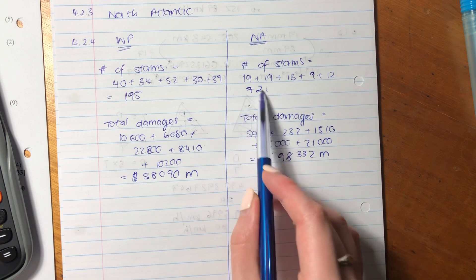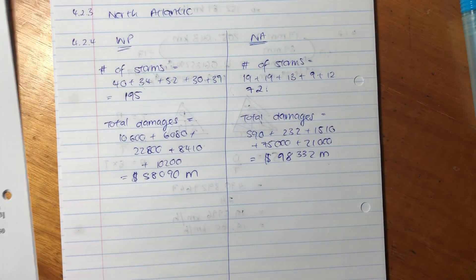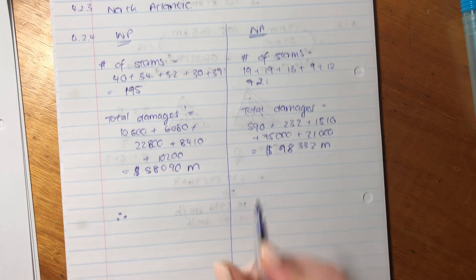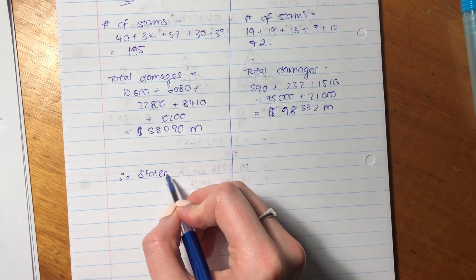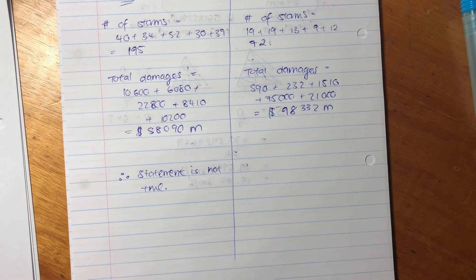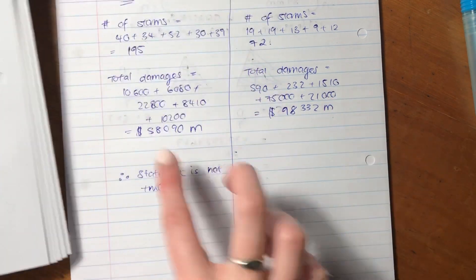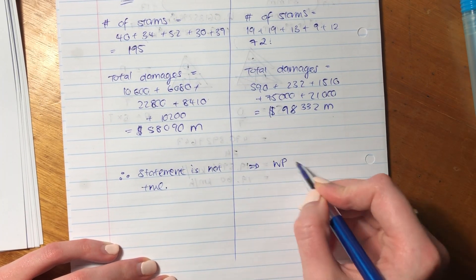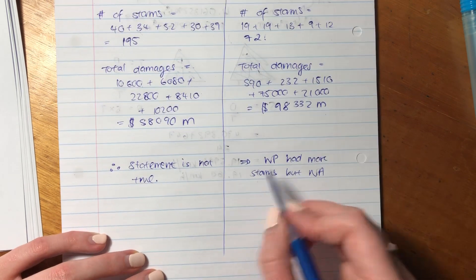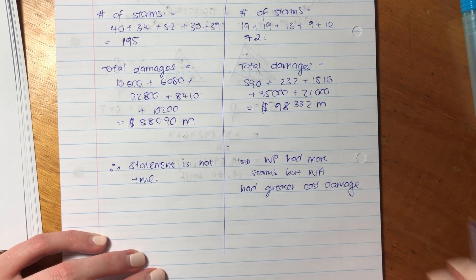So we know, can you see here, where there were fewer storms, it was more expensive than where there was more storms. So is the statement true? I don't think it is, because the statement was, he stated that the more storms the region experienced, the greater the amount of damage caused by them. So, therefore, statement is not true. Because we see the Western Pacific had the most storms, but the North Atlantic had the greatest amount of damage. So that's the reason, because it said show calculations, verify, and give a reason. So we've done all of that except for giving a reason. So we say here, Western Pacific had more storms, but North Atlantic had greater cost damage. That's important.